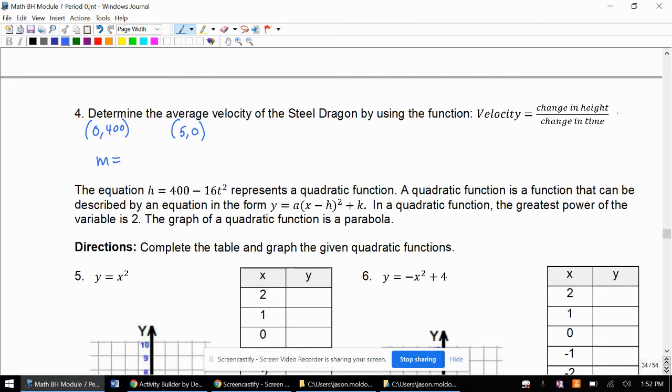So slope formula, or change in height over change in time, or change in y over change in x. So y2 minus y1, I'm going to do 400 over zero, y2 minus y1 over x2 minus x1.